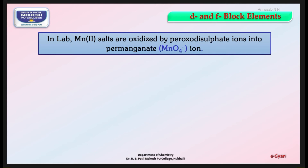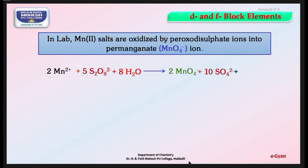In the laboratory, Mn²⁺ salts are oxidized by peroxodisulfate ions into permanganate ion. The equation is: Mn²⁺ + peroxodisulfate + H2O → MnO4⁻ + SO4²⁻ + H⁺. So Mn²⁺ salts are converted into MnO4⁻, that is KMnO4.